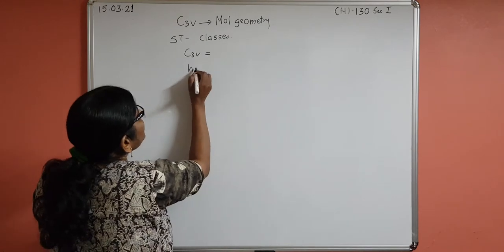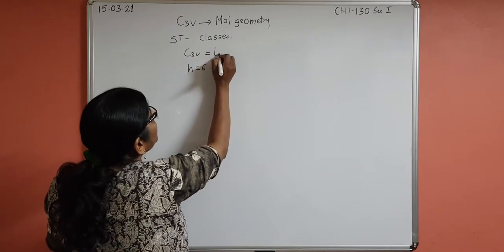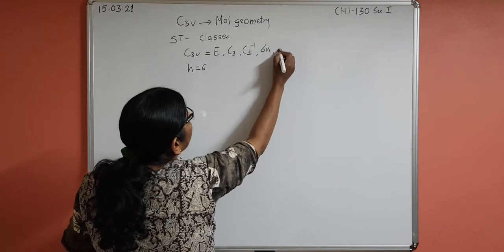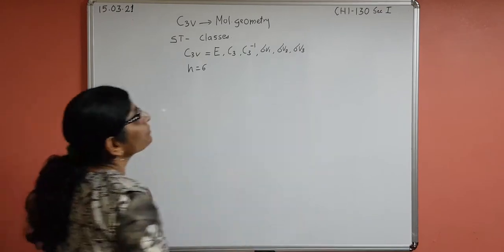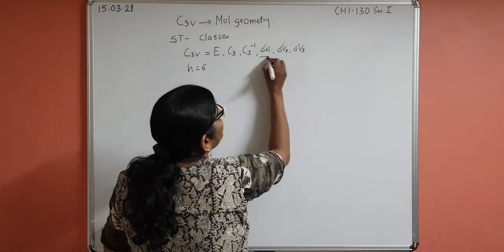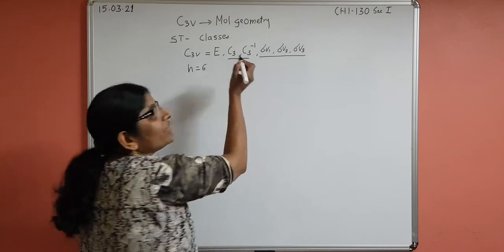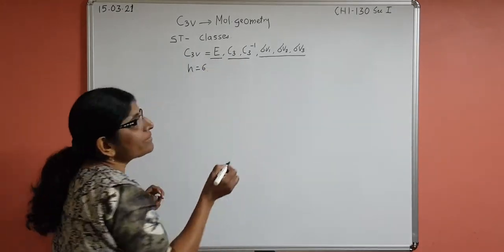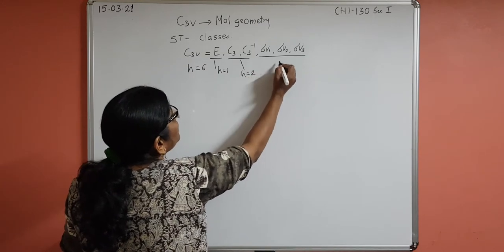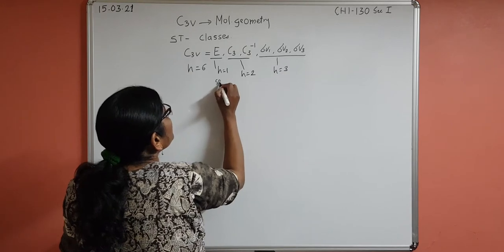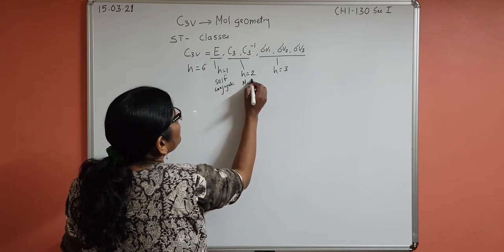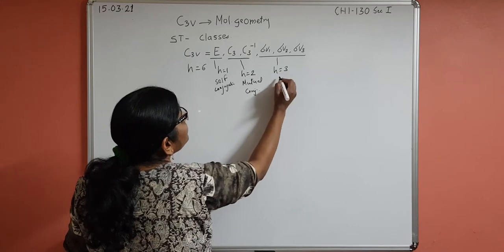C3V has six elements: H equals 6. These six are divided into identity, C3, C3 inverse, σV1, σV2, and σV3. Identity is in one class (self-conjugation), C3 and C3 inverse are in one class (mutual conjugation), and σV1, σV2, σV3 are in one class (associative conjugation), with H equal to 1, 2, and 3 respectively.